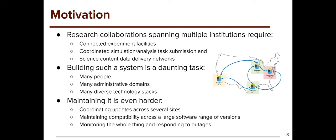Beyond policy, there's significant diversity in technology stacks — different operating systems, storage technologies, and so on. And even if you get all that together, you then have to maintain it. Coordinating updates across several sites is really challenging. You have to maintain compatibility across a large range of software versions. My cartoon shows four different sites running three different versions of some data lake software, meaning any clients must be compatible with all versions. Monitoring the whole thing, responding to outages and vulnerabilities, can be really difficult.